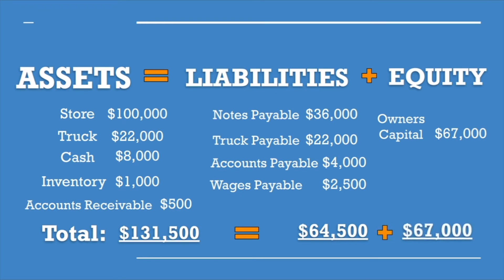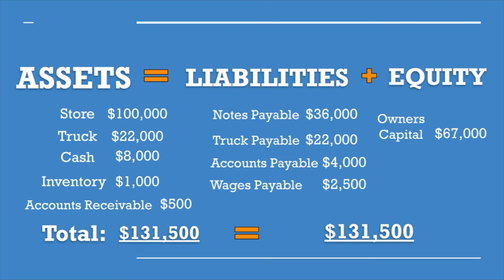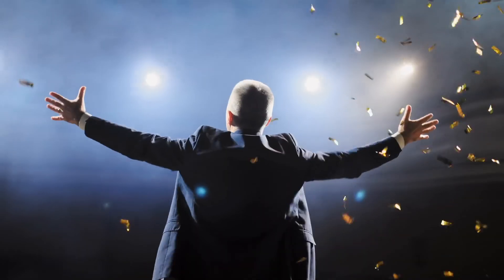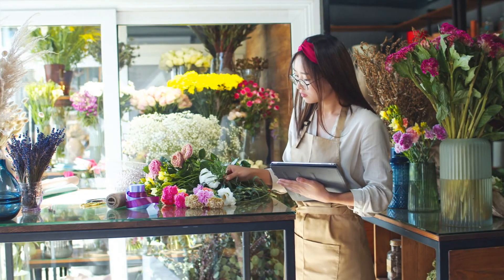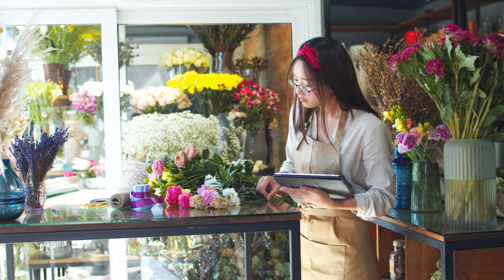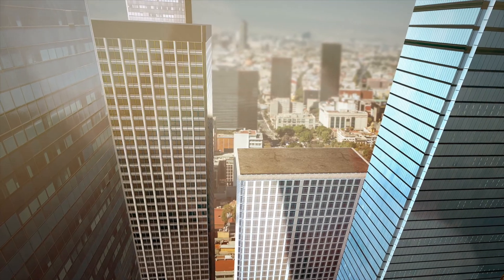We have $67,000 in owner's capital under equity. So $67,000 plus $64,500 equals $131,500. Assets of $131,500 on the left equals liabilities plus equity of $131,500 — we balanced! This applies to all types of companies, from small mom-and-pop shops all the way to big corporations. And we just created a mini balance sheet for our flower shop business.